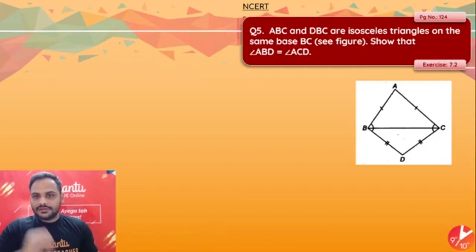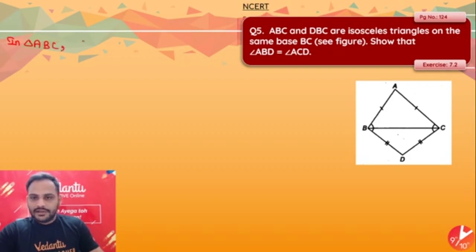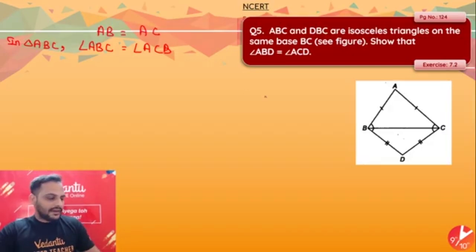Let's look at question number 5, page number 124 of NCERT exercise 7.2. It says ABC and DBC are isosceles triangles on the same base BC. Show that angle ABD is equal to angle ACD. Since it's an isosceles triangle, I can clearly say that in triangle ABC, angle ABC is equal to angle ACB because AB is equal to AC. If two sides are equal, the angles opposite to them will also be equal. This is equation 1.